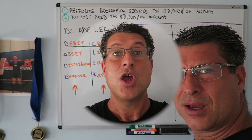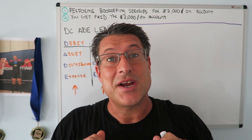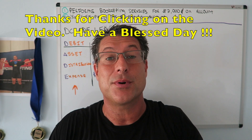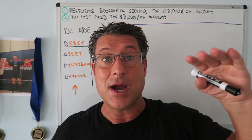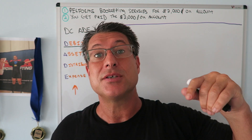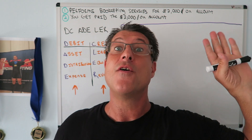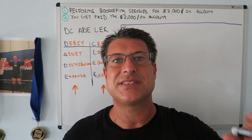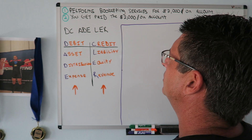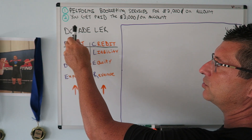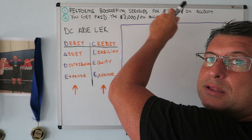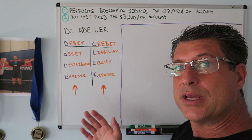CPA strength here — strongest CPA in the state of Florida. I've been going through my comments, so leave a comment if you don't understand something or want to see another video, and please like this. We're doing two transactions today that I've done separately before, but I'm putting them together so you can see them side by side. We'll be using the DC Adler — debit, credit: asset, distribution, expense, liability, equity, revenue. If you don't understand this, I have many videos on my playlist you should watch first.